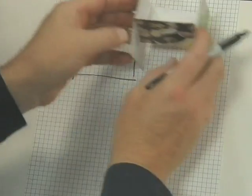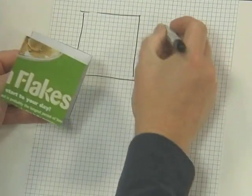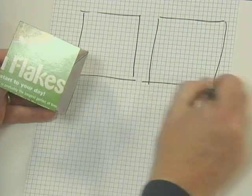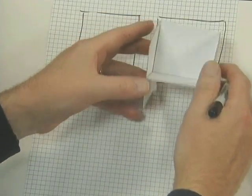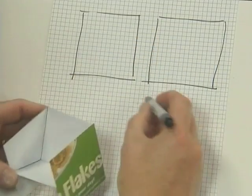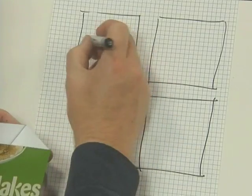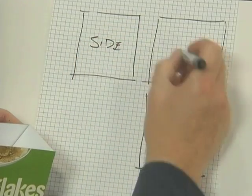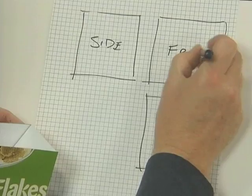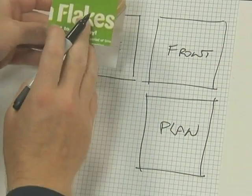I also want to produce the front view and that's going to appear about there. That's that view. I also want to produce the plan and that's going to be a view down to here. So this is my side view, this is going to be my front view and this is going to be my plan view.